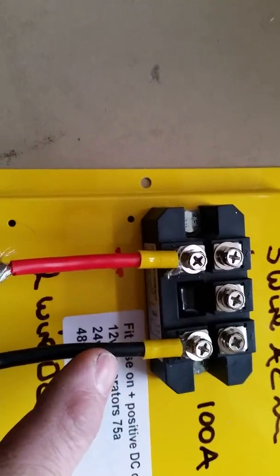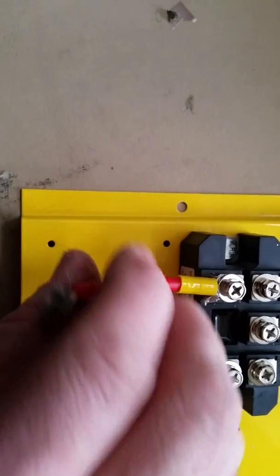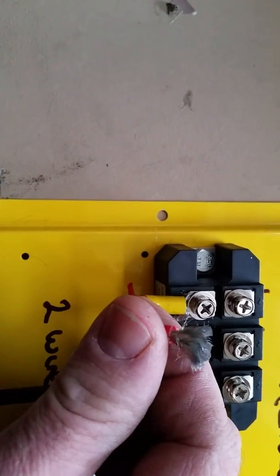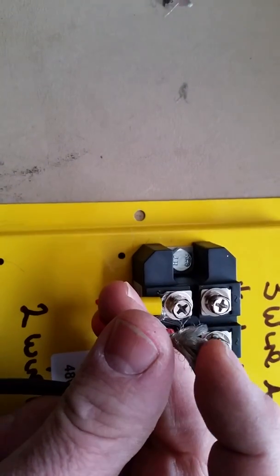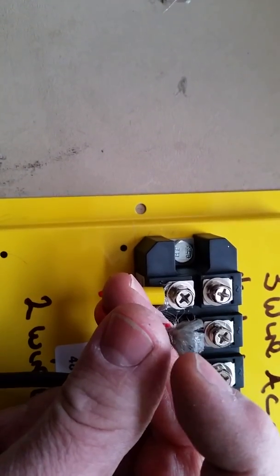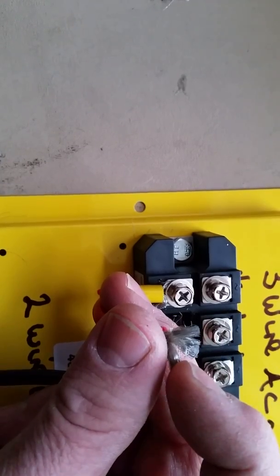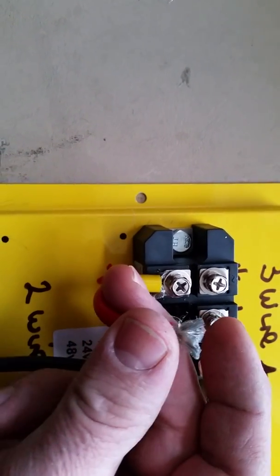On the DC output I use a 12.2 depending on the cable length again. This is a DC battery cable. It's copper and silver coated. You don't have to have silver coated you can just go for copper.